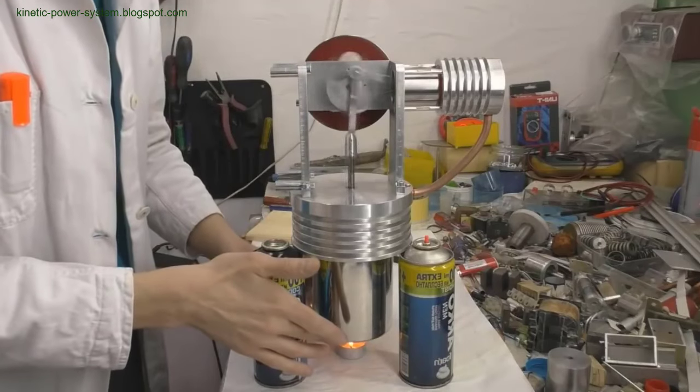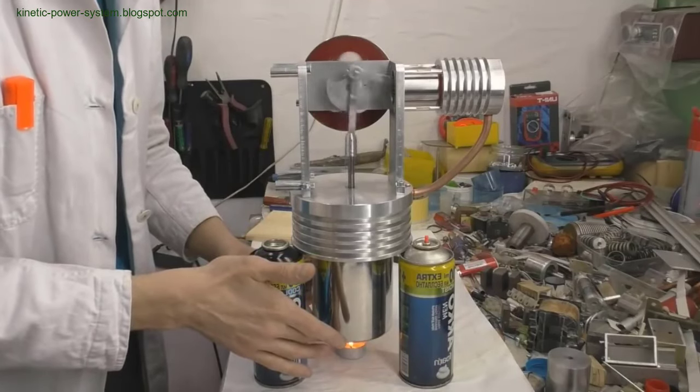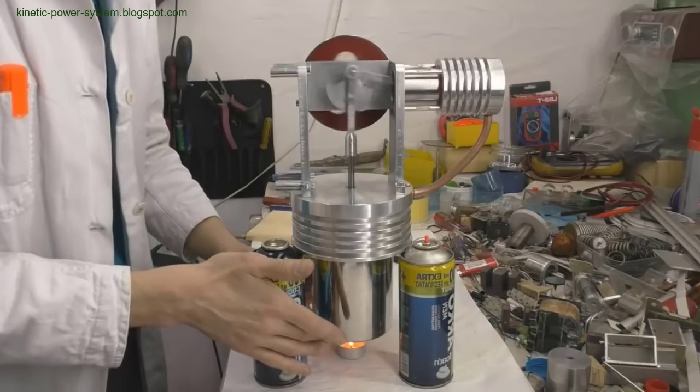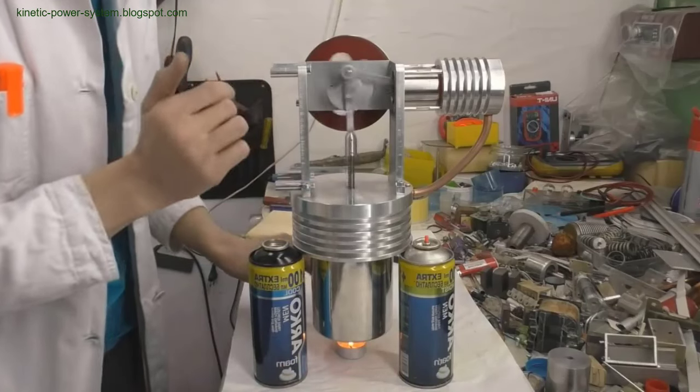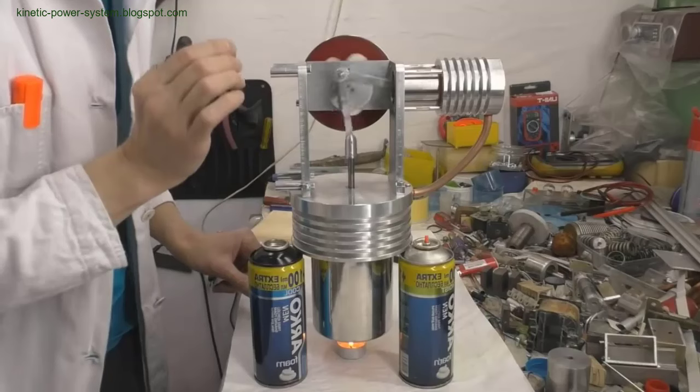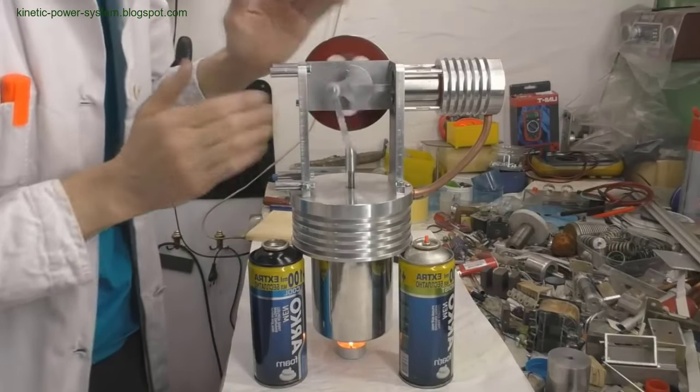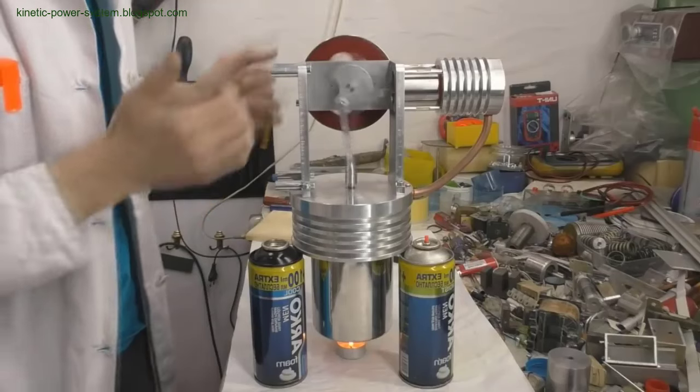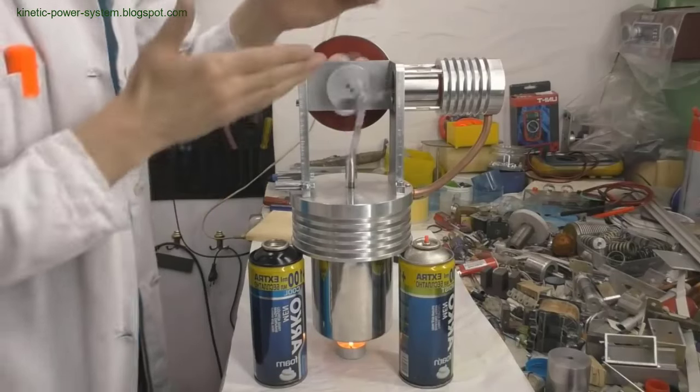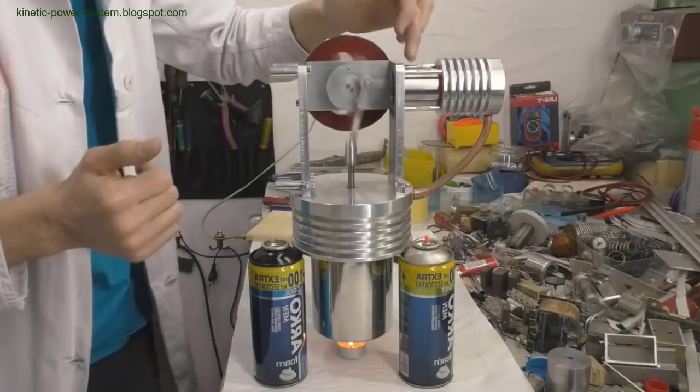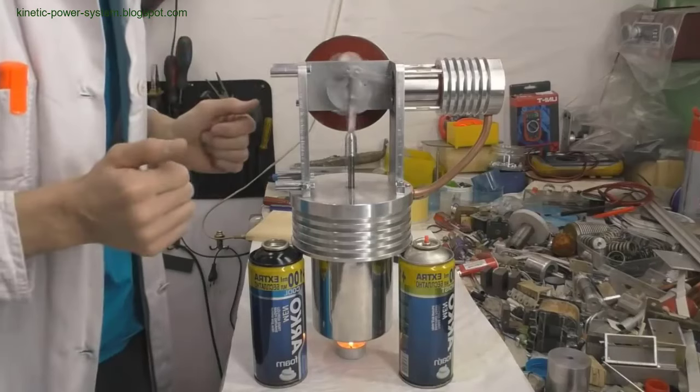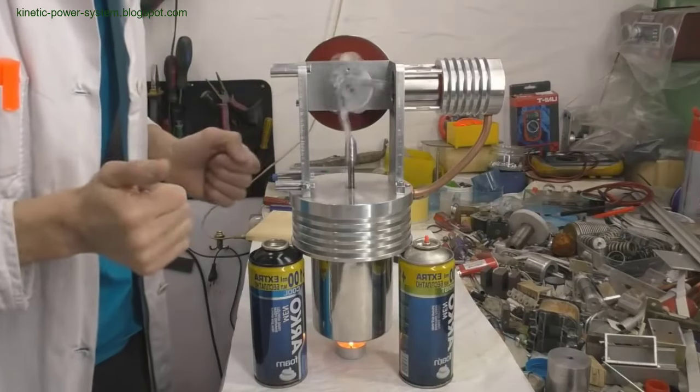Experimentation and practical applications. I have been actively engaged in creating a Stirling engine and have experimented with various components, including Peltier elements, to compare their power output against mechanical generators. In my latest project, I tested a Stirling engine using a small Chinese candle as the heat source. Despite the modest heat output, the engine performed well, demonstrating effective heat transfer and mechanical work.